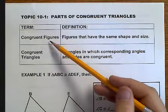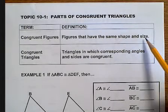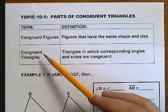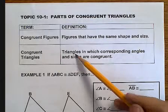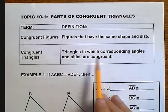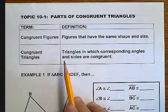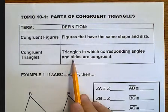First we have some vocabulary terms. Congruent figures, you should already know, are figures that have the same shape and the same size. So congruent triangles are triangles that have the same shape and same size, which also means that the corresponding angles and the corresponding sides are congruent.